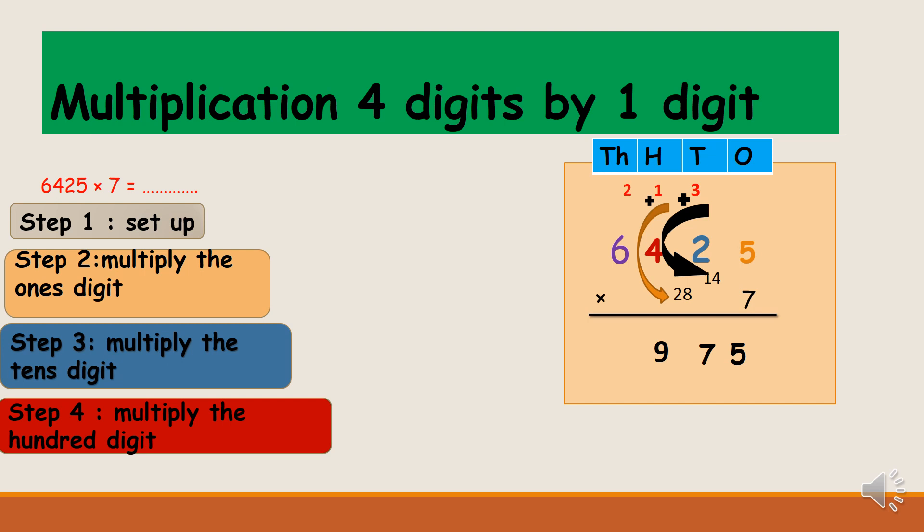Now seven will multiply the thousands digit. Seven times six is 42. 42 plus two is 44. I'm gonna write all 44 down because there is no more digit to regroup it on.